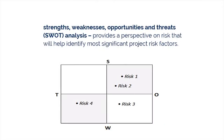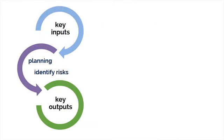SWOT analysis is a highly beneficial technique in this process. It stands for Strengths, Weaknesses, Opportunities, and Threats, and it visually provides a perspective on risk that will help identify the most significant project risk factors. And finally, expert judgment. The key output in the Identify Risks process is the risk register — a document that contains a list of the identified risks and a list of potential responses. We continue to add information to the register each time we go through one of the processes in risk management, so make a note of this as we continue through the remaining risk management processes.